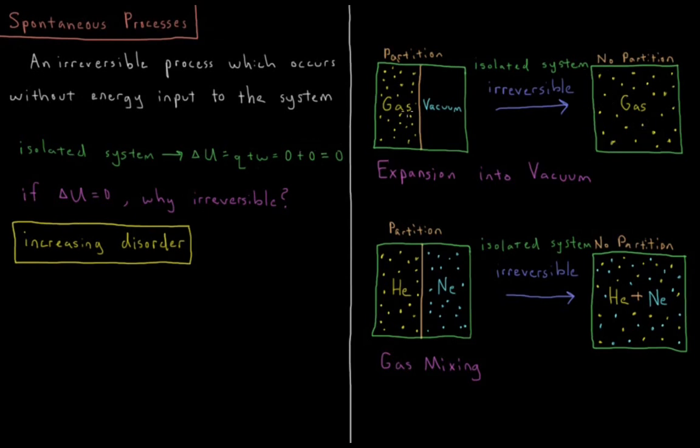Yet we know that the gas spontaneously expands into the vacuum, but it will not spontaneously create a vacuum out of itself again. So we know that this process is irreversible. But since the change in energy is zero, why is it irreversible? What is the defining characteristic of this system that causes this process to occur in this direction, but not in the reverse?